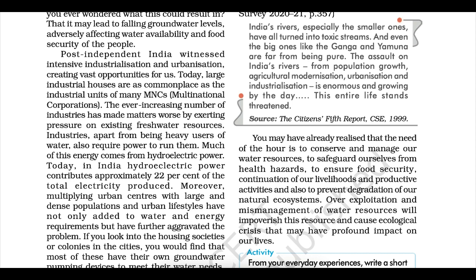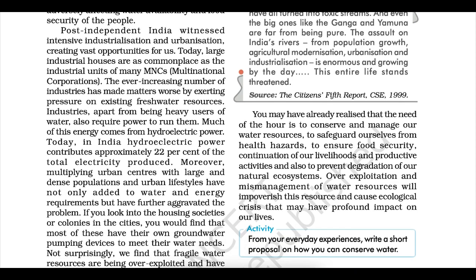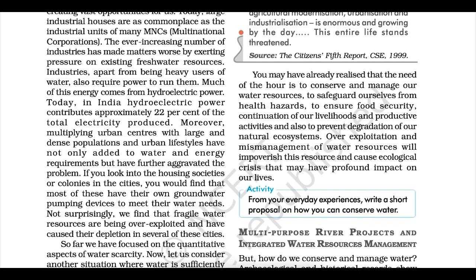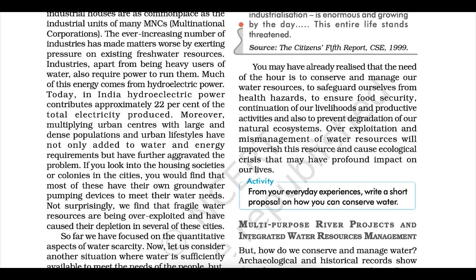India's rivers, especially the smaller ones, have turned into toxic streams. Even big rivers like the Ganga and Yamuna are far from pure. The strain on India's rivers from population growth, agricultural modernisation, urbanisation and industrialisation is enormous and growing. We must conserve and manage water resources to safeguard ourselves from health hazards, ensure food security, continuation of livelihoods, and prevent degradation of natural ecosystems. Overexploitation and mismanagement will cause an ecological crisis with profound impact on our lives.